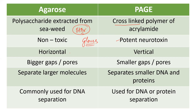Agarose is a horizontal gel electrophoresis. PAGE is vertical. In agarose, there are bigger pores; in PAGE, there are smaller pores. Because of the pore size, whatever samples are going to be separated is also influenced. Larger pores allow separation of larger molecules; smaller pores allow separation of smaller DNA and protein molecules. Agarose gel is commonly used for DNA separation; PAGE is used for DNA or protein separation.